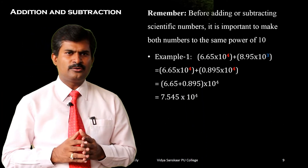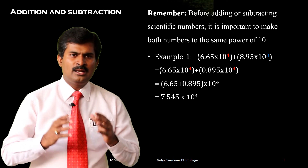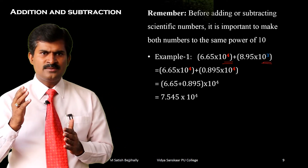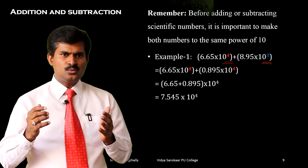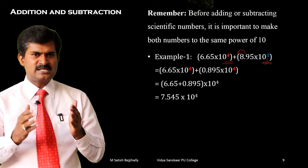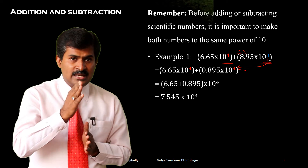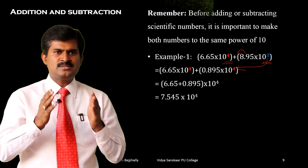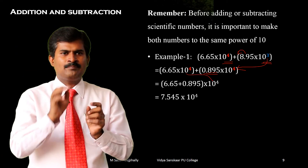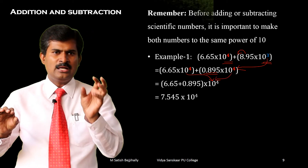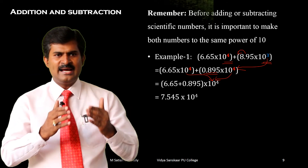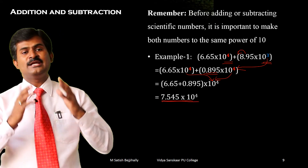For example: 6.65 into 10 to the power of 4 plus 8.95 into 10 to the power of 3. Here one exponent is 4 and the other is 3; they are different, and the lower exponent is 3. We need to increase the exponent value from 3 to 4. So 8.95 into 10 to the power of 3 becomes 0.895 into 10 to the power of 4. Now both exponents are the same. Taking the exponent as common and adding: 6.65 plus 0.895 into 10 to the power of 4, giving the answer 7.545 into 10 to the power of 4.